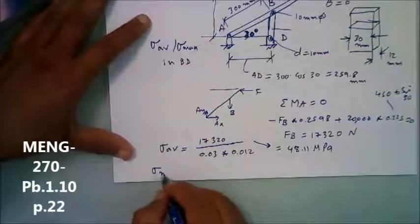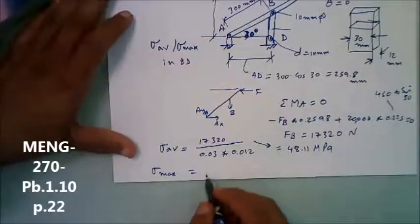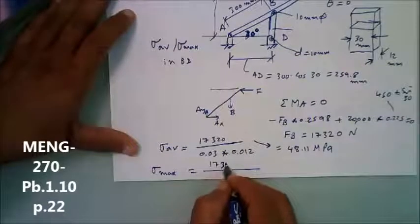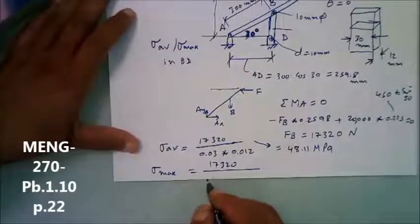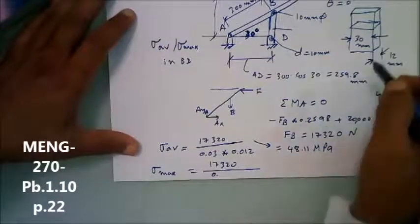What about sigma maximum? Remember BD. What would be the maximum? At the smallest cross section.